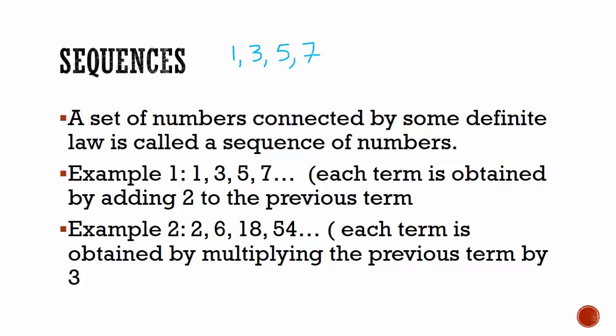And this dot dot dot means that it continues indefinitely. If we were asked to determine the fifth number in this sequence, we need to see what the pattern is. 1, then we go to 3, then we go to 5. So we can see that each number adds 2 to the number before it. So 3 is 1 plus 2, then 5 is 3 plus 2, 7 is 5 plus 2.